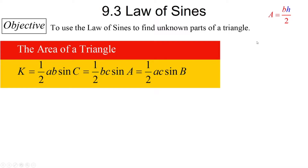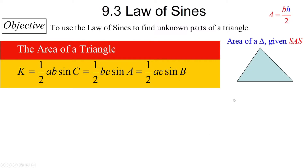Let's see this formula in action. We'll find the area of a triangle given Side-Angle-Side. Here's a typical triangle with one side of 4 centimeters, another side of 7 centimeters, and the included angle of 73 degrees. Notice I don't have the height here — I could find it with right triangle trigonometry, but this formula will be much more efficient.